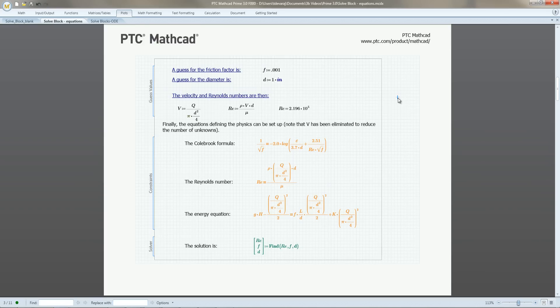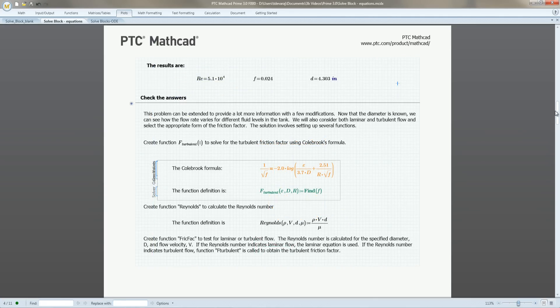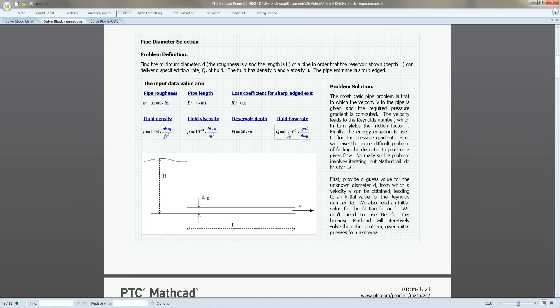We use the Solve Block to solve for the Reynolds number, friction factor, and pipe diameter. We extend this by parameterizing the Solve Block, allowing us to calculate the flow rate for any given reservoir depth.